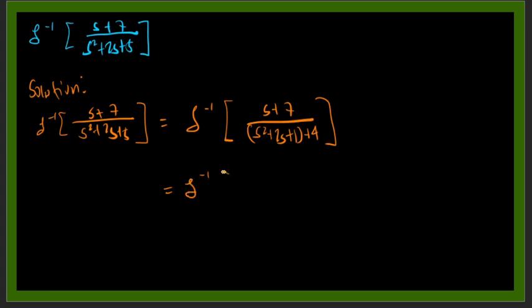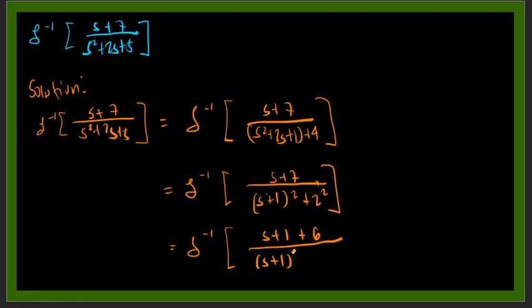Then we'll just separate this one. We have the inverse Laplace of s plus 7. You could basically do this one so you have s plus the all over s plus 1 squared plus 2 squared. Now we need to find a solution for us to have our s plus 1 here. We could have that one as s plus 1 plus 6 all over s plus 1 squared, this is another quantity, plus 2 squared.